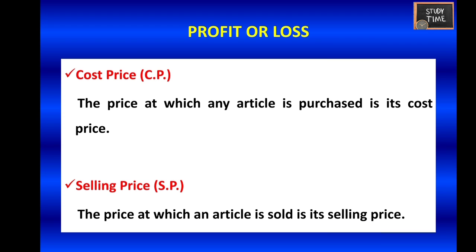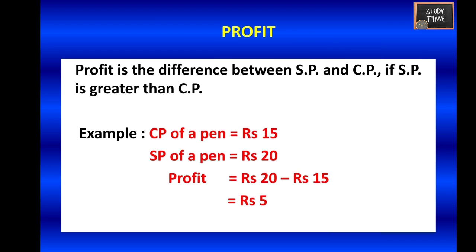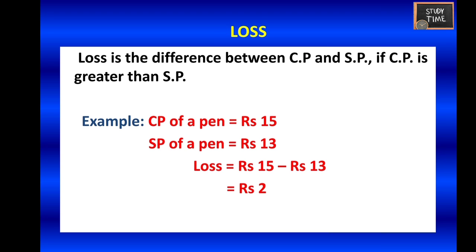Next we are going to see profit or loss. You need to know about cost price and selling price. The price at which any product is purchased is called its cost price. The price at which it is sold is called the selling price. If the selling price is greater than the cost price, you will get a profit. If the cost price is greater than the selling price, you will incur a loss.